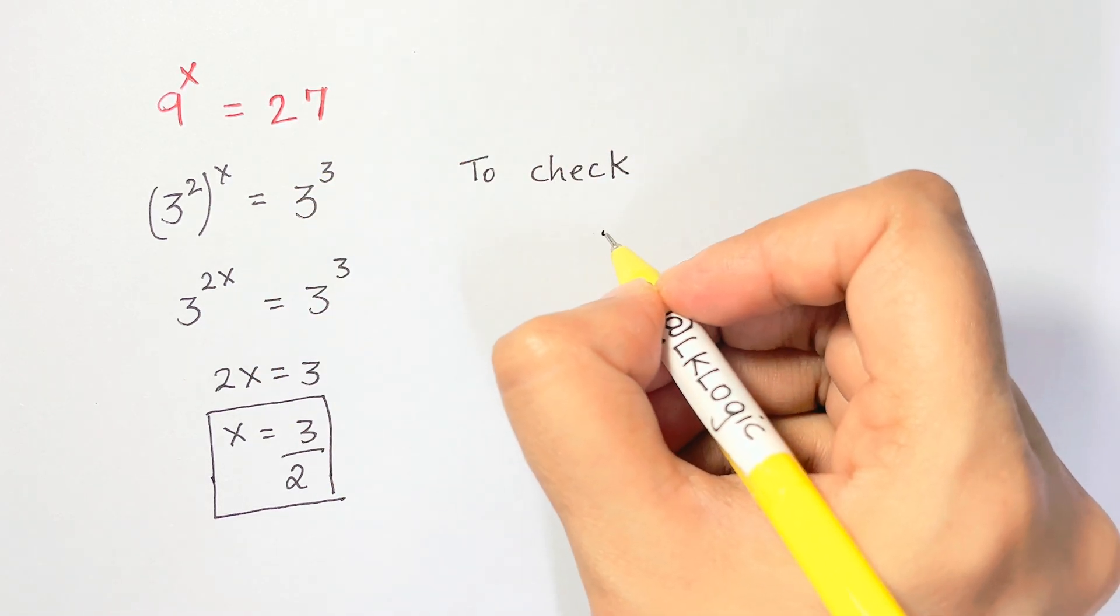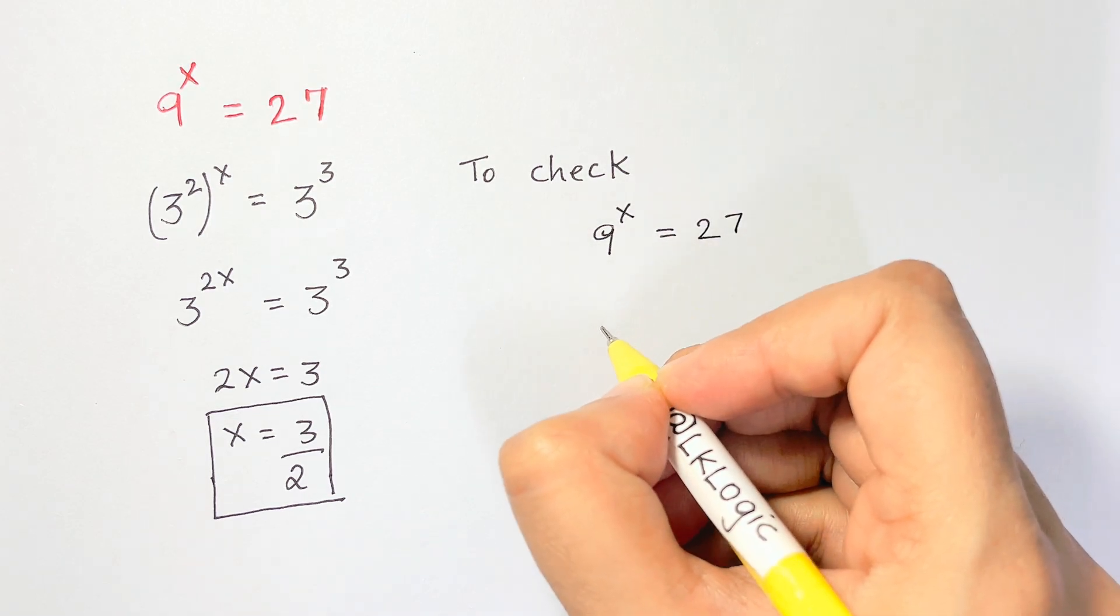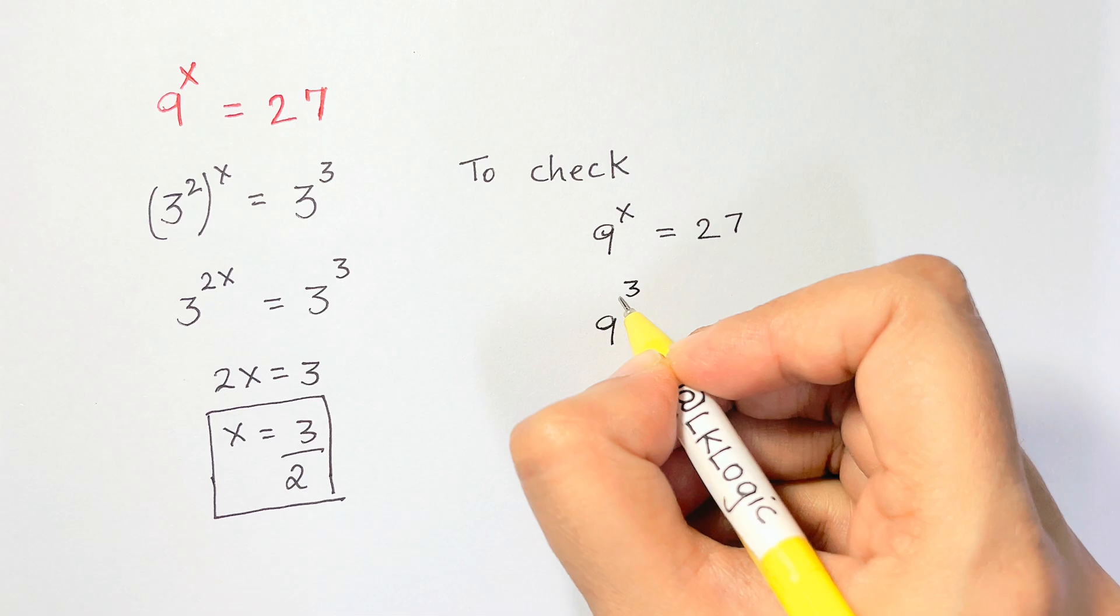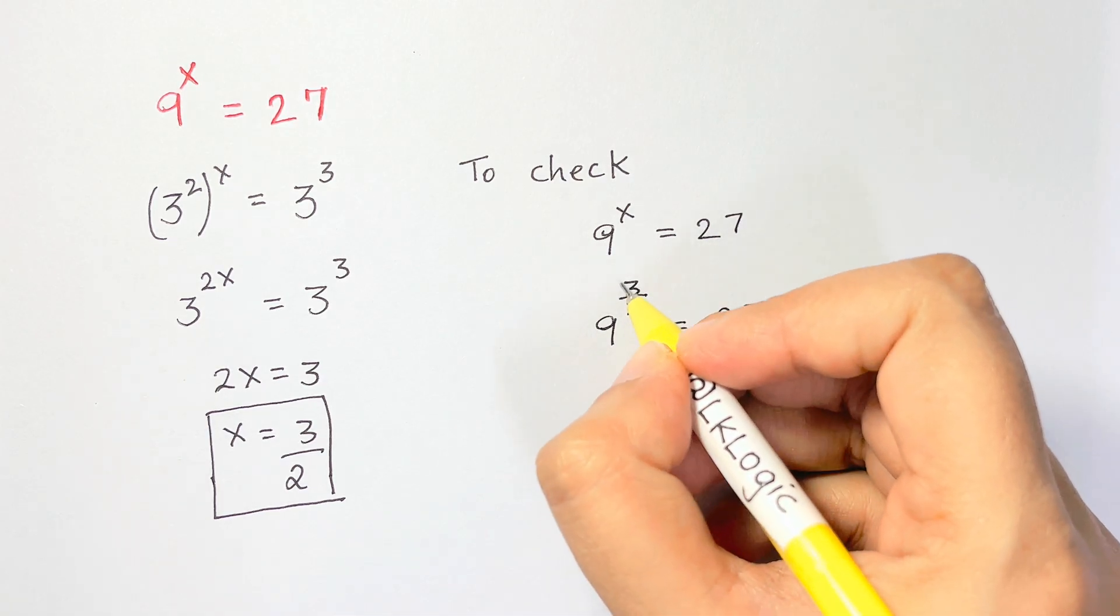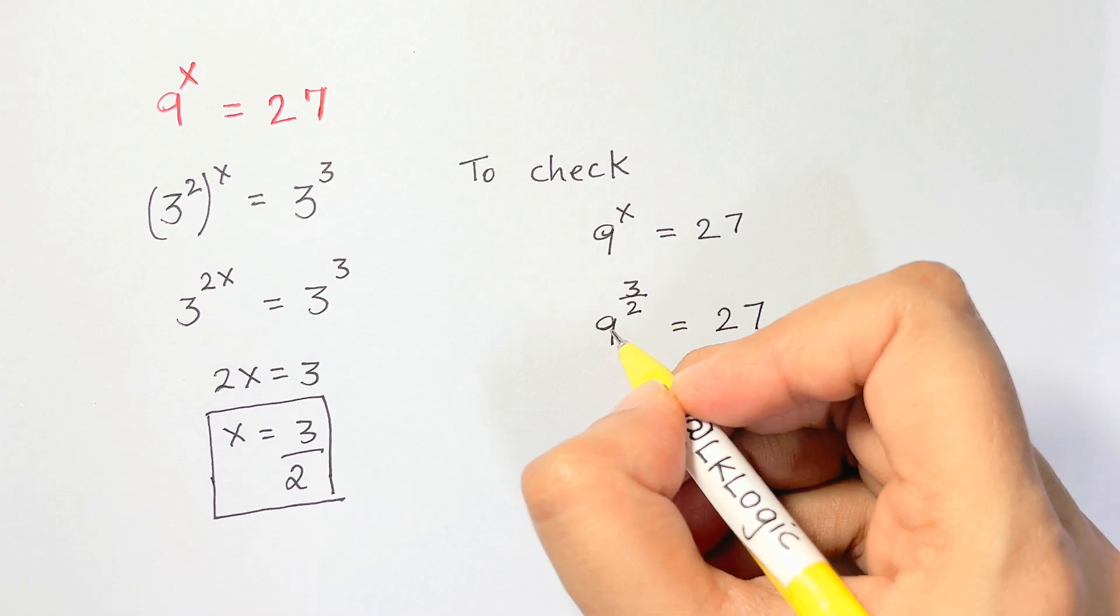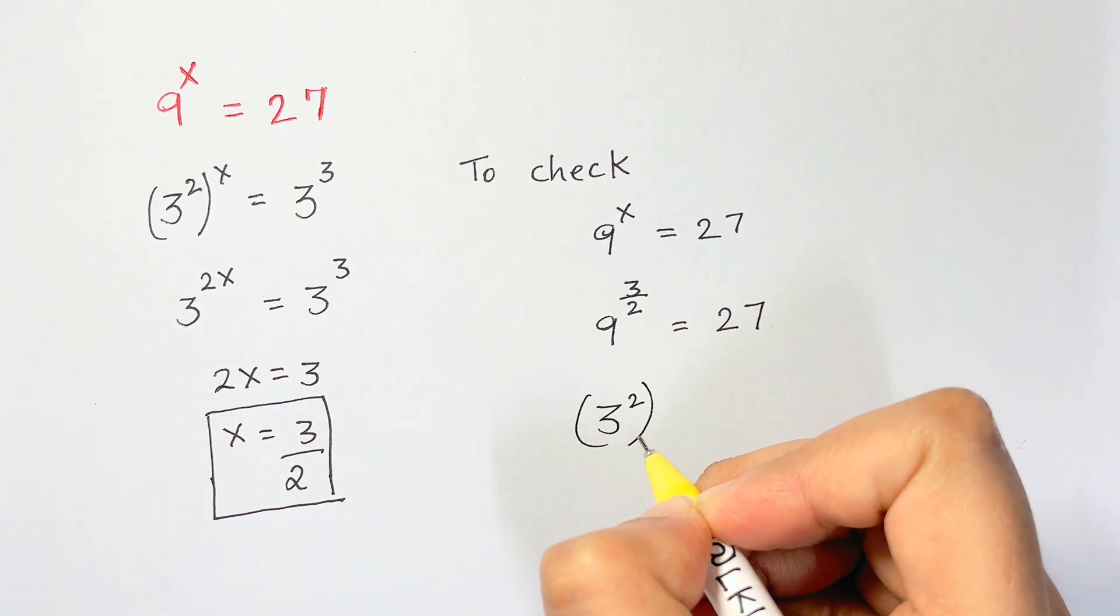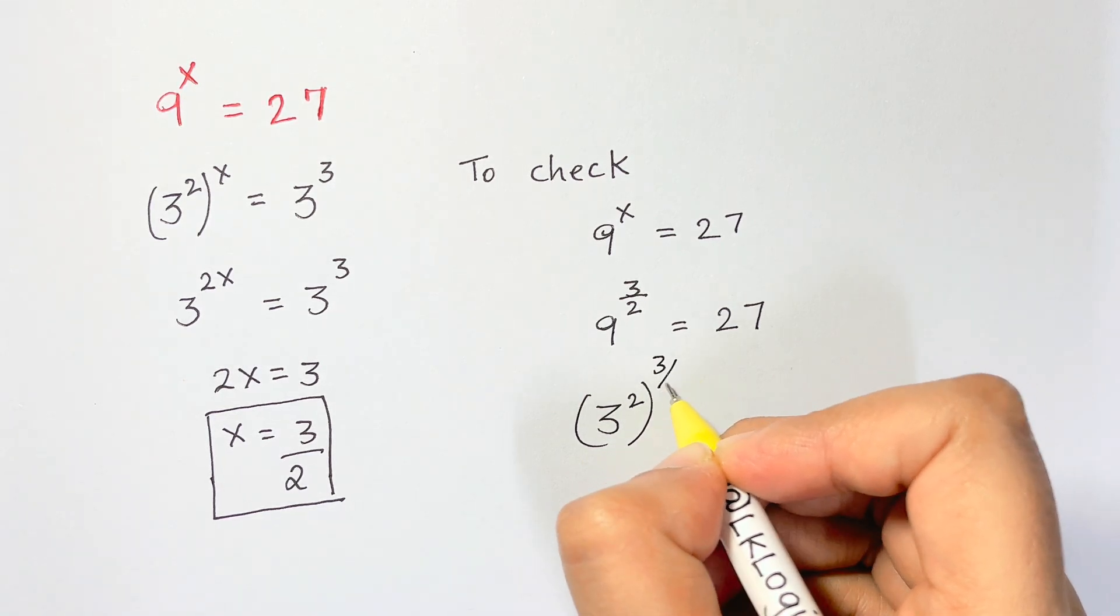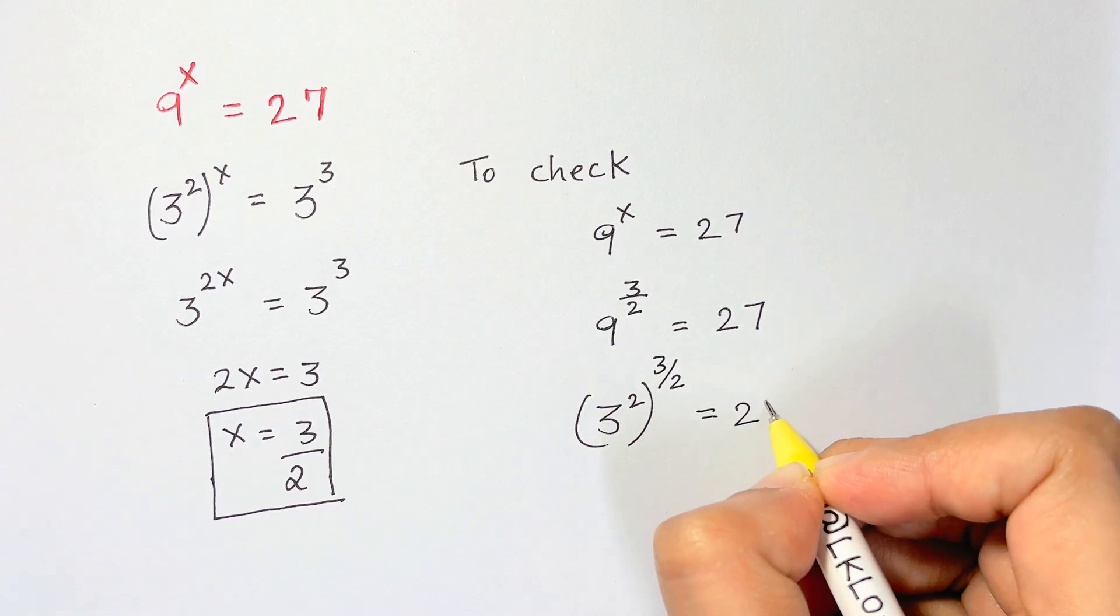Let's put it back in our equation, which is 9 to the power of x equals 27. So here we have 9 to the power of 3 over 2 equals 27. Now how can you find 3 over 2 as a power for this one? Just break it down again. 3 squared to the 3 over 2 equals 27.